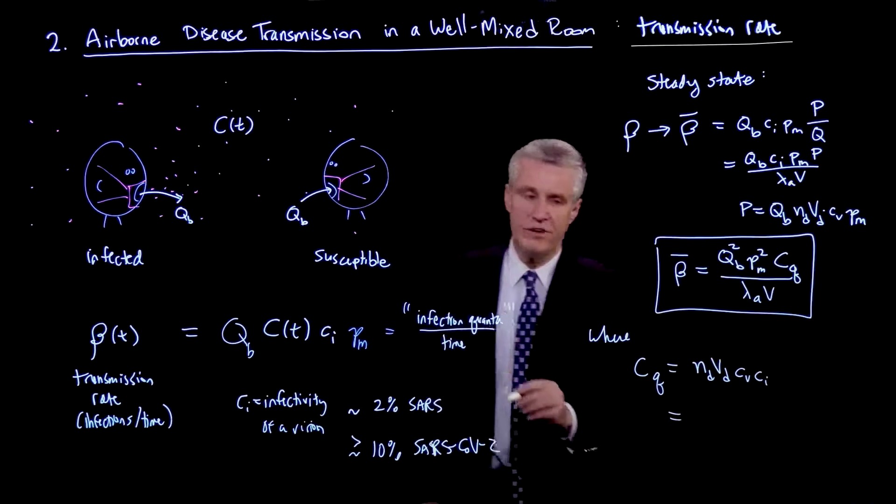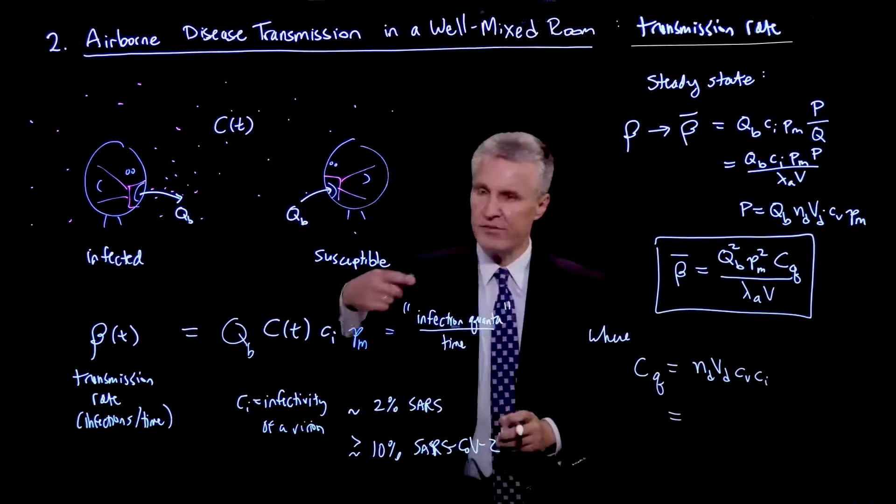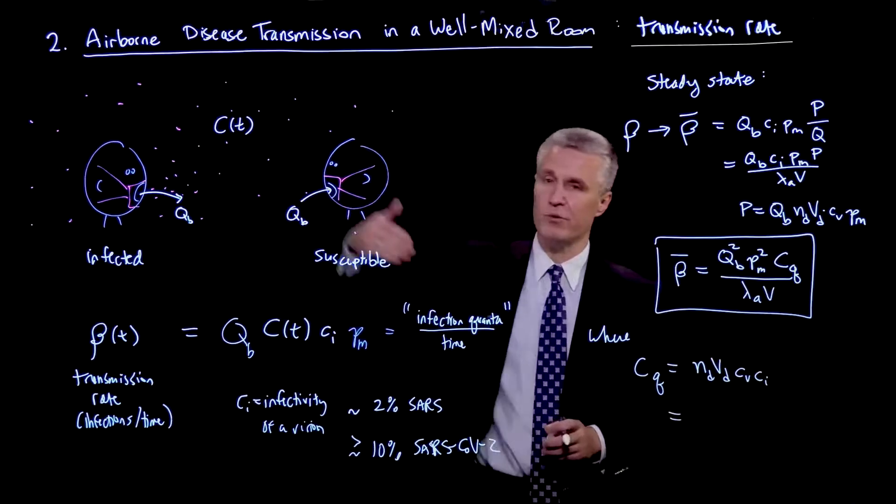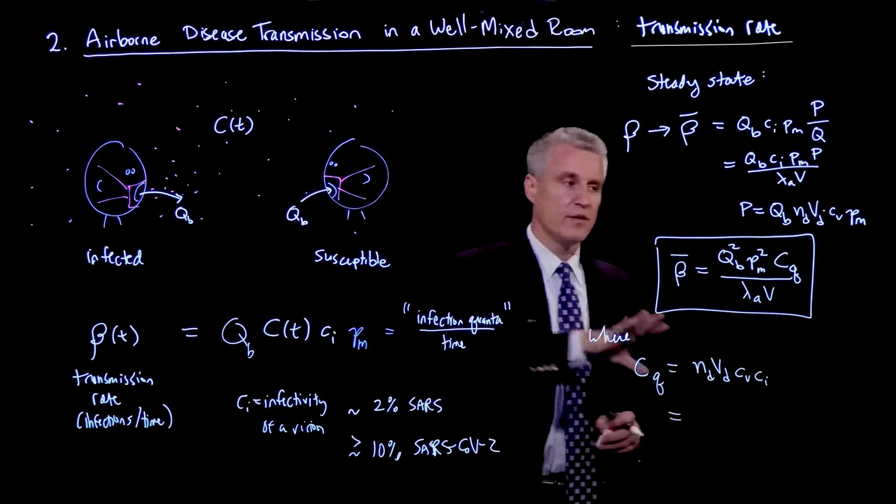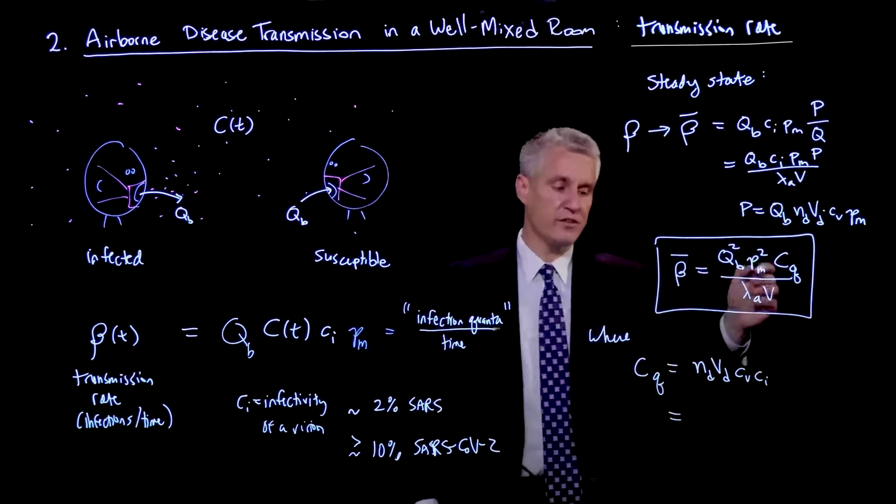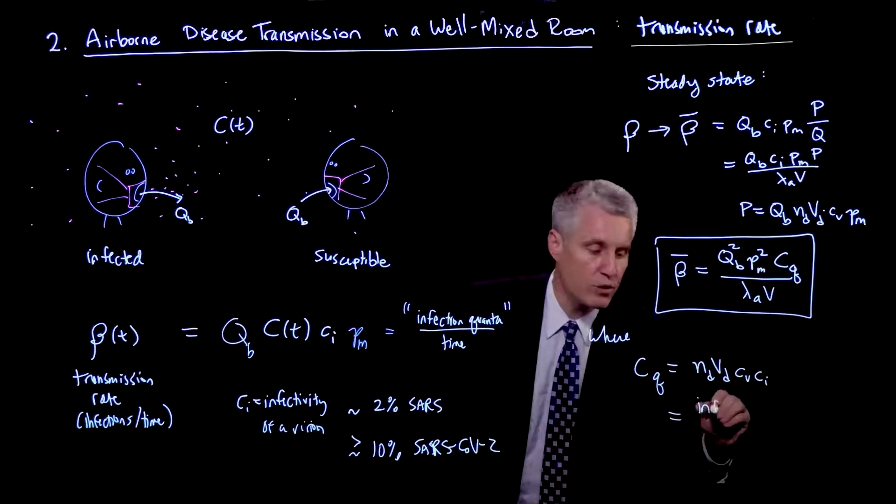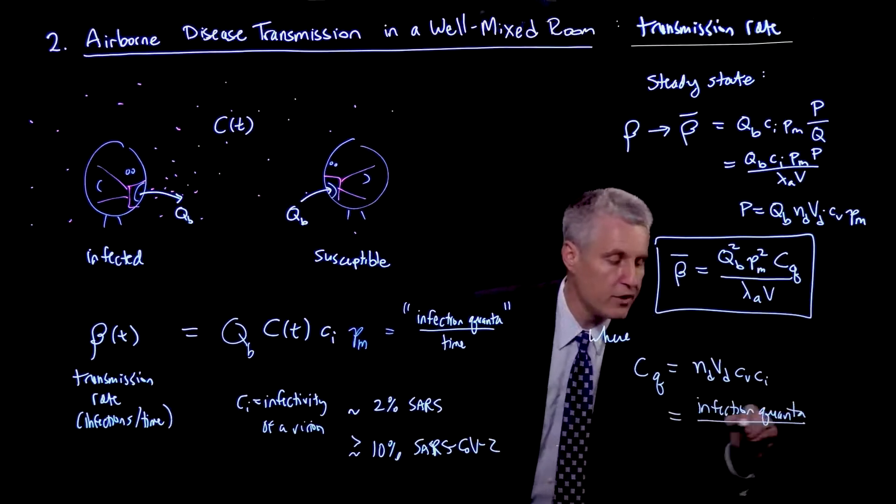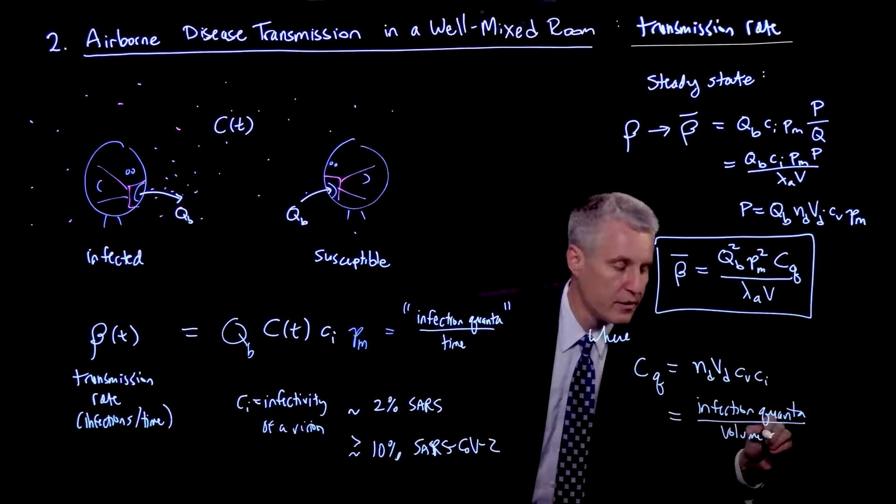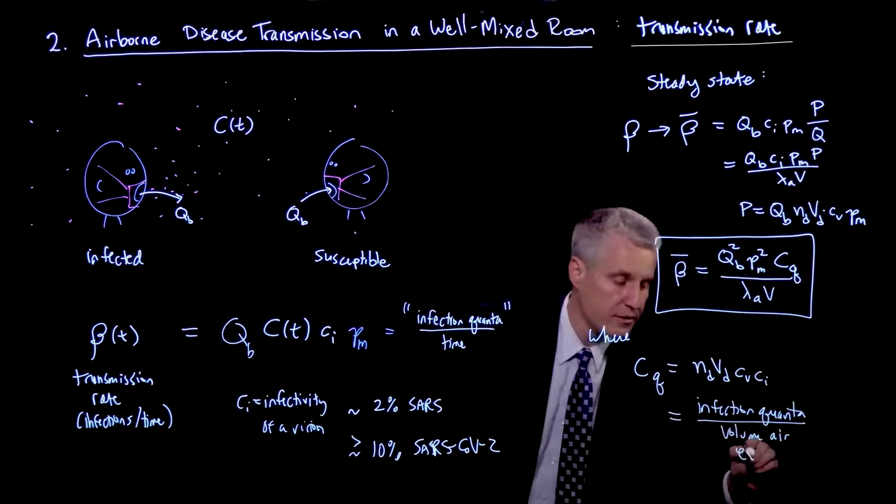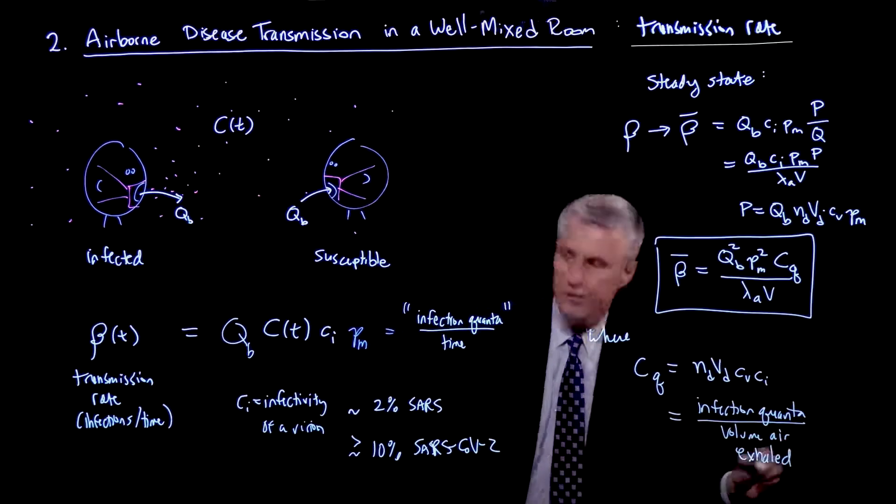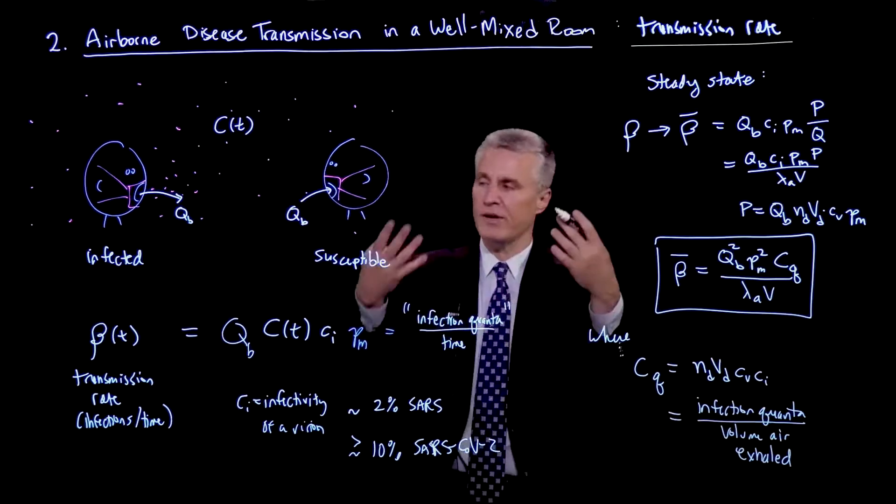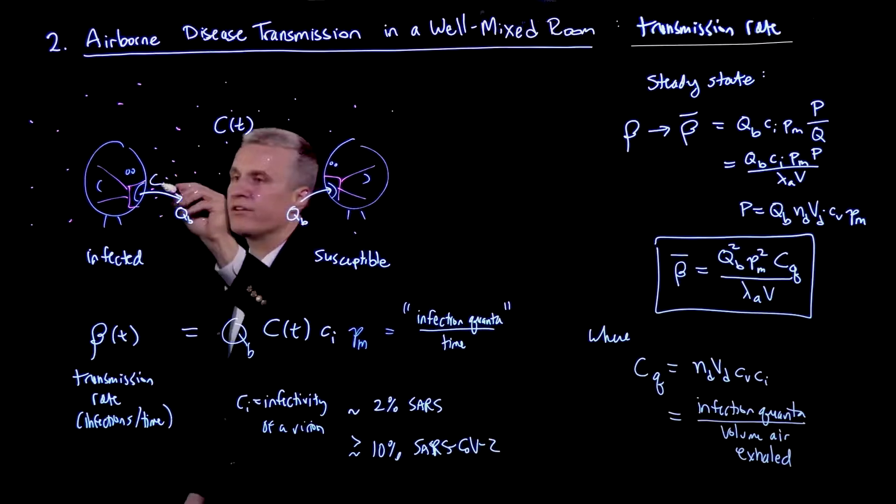So coming back to this notion of infection quanta, while beta is an infection quanta per time, which are being transmitted from one infected person to one susceptible person, the way I've written it here is I've re-expressed it as infection quanta per volume of air exhaled. So while C is the concentration of virions in the background, there is this CQ, which is essentially the infection quanta that are being released.